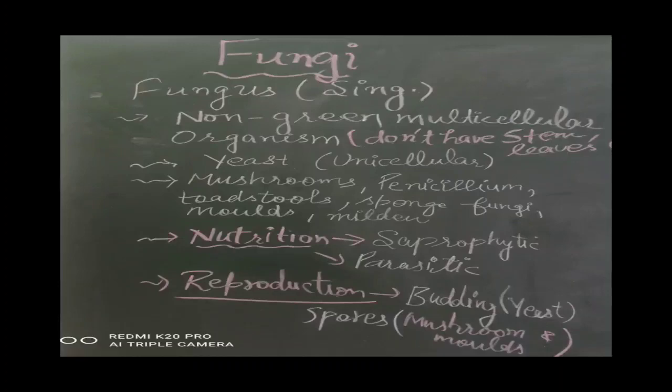Budding occurs in yeast — there is an extra outgrowth that starts growing, then detaches and becomes a new yeast organism. That is known as budding. Spore formation can spread out from water and air, like in mushrooms and molds. This is all about fungus.